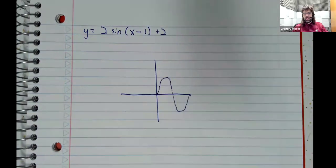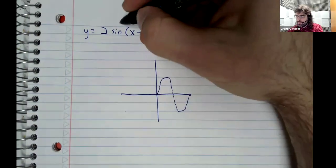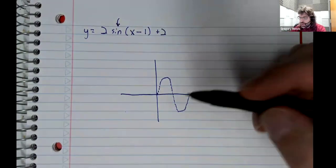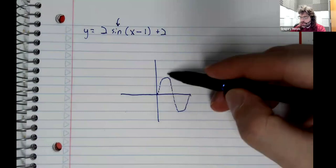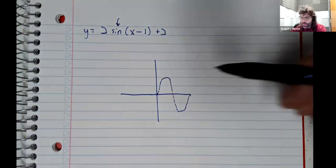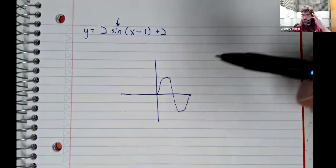So we'll start by graphing sine. So the sine looks like this. And of course, the sine repeats forever in both directions.